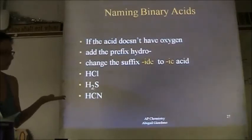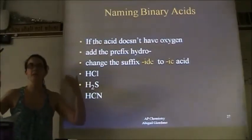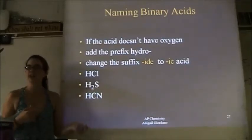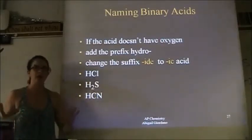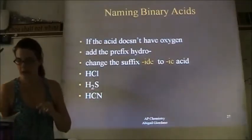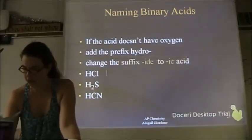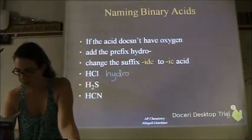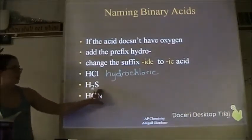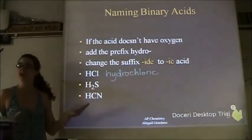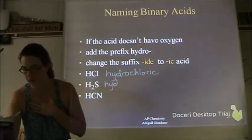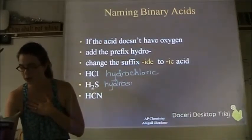Let's do some examples. You're taking a test, you see this formula, you recognize it's an acid, you don't see oxygen, so you say: that's a binary acid. How would you name this? Hydro — because it's binary — hydrochloric acid. This next one: that subscript is not going to affect the name. Hydro... hydrosulfuric — don't say 'sulfic.'